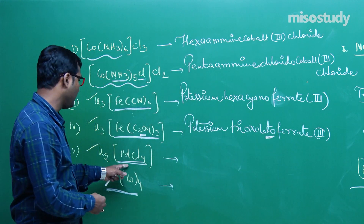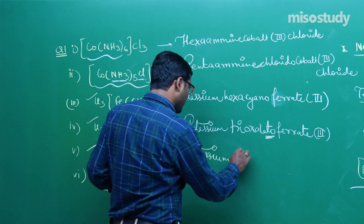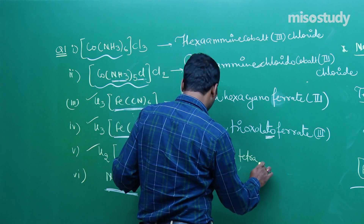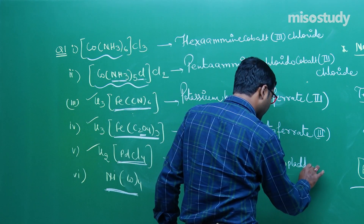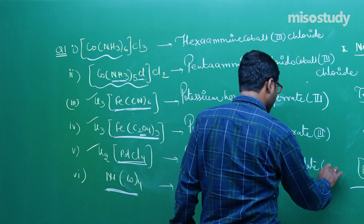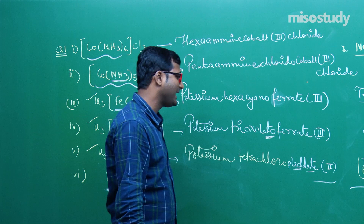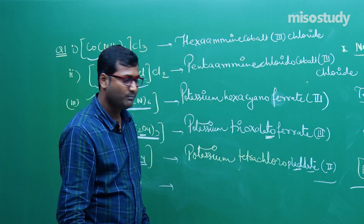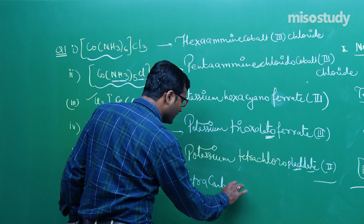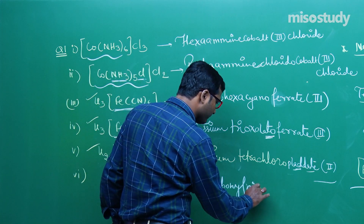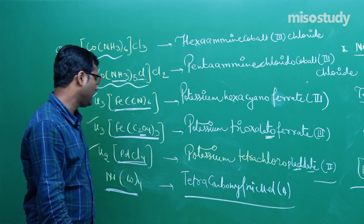For K2[PdCl4]: potassium tetrachloropalladate(II) — in some books written with single D as pladate, in others with double D as pladdadate. And for Ni(CO)4: neutral complex — tetracarbonyl nickel(0).